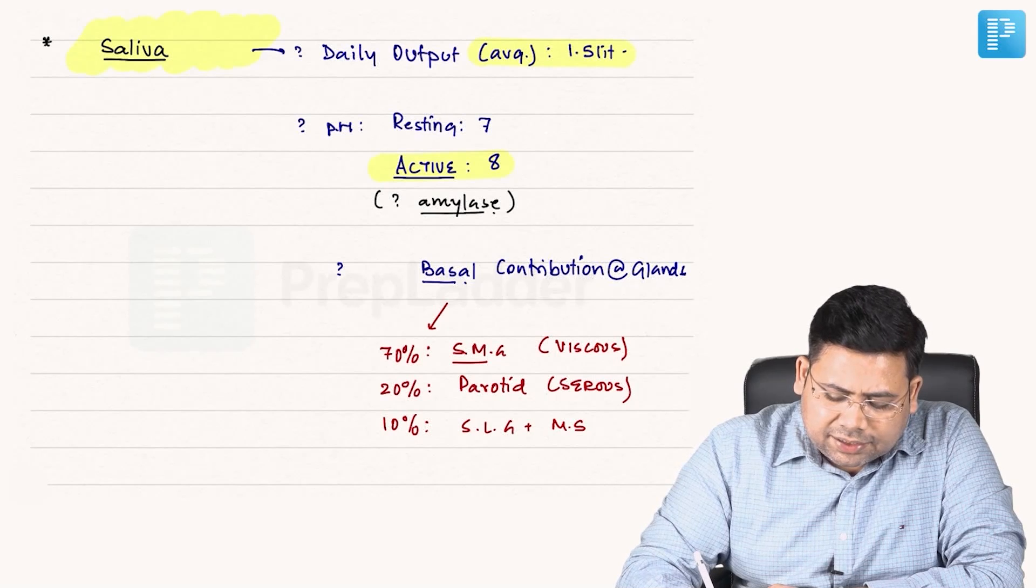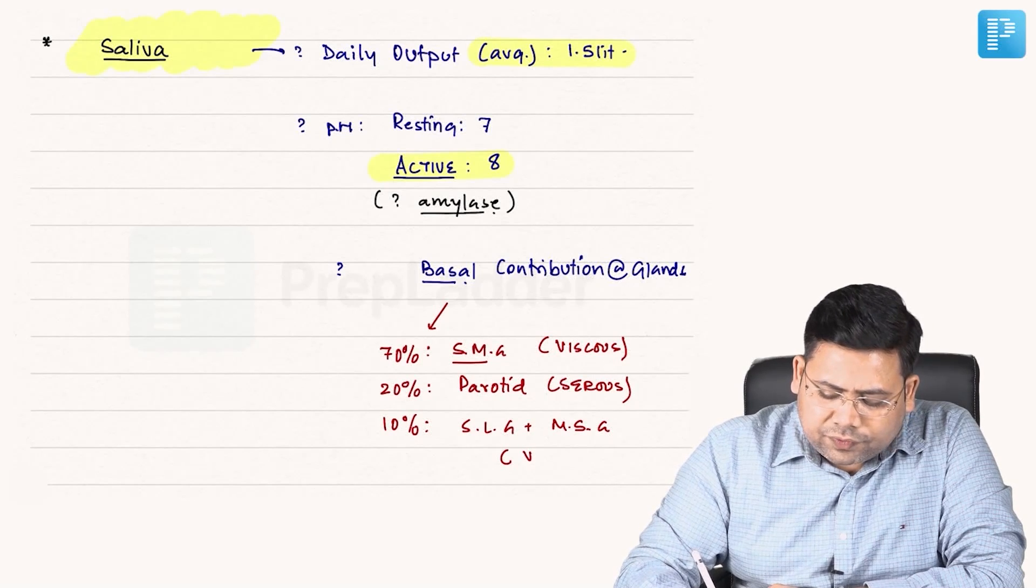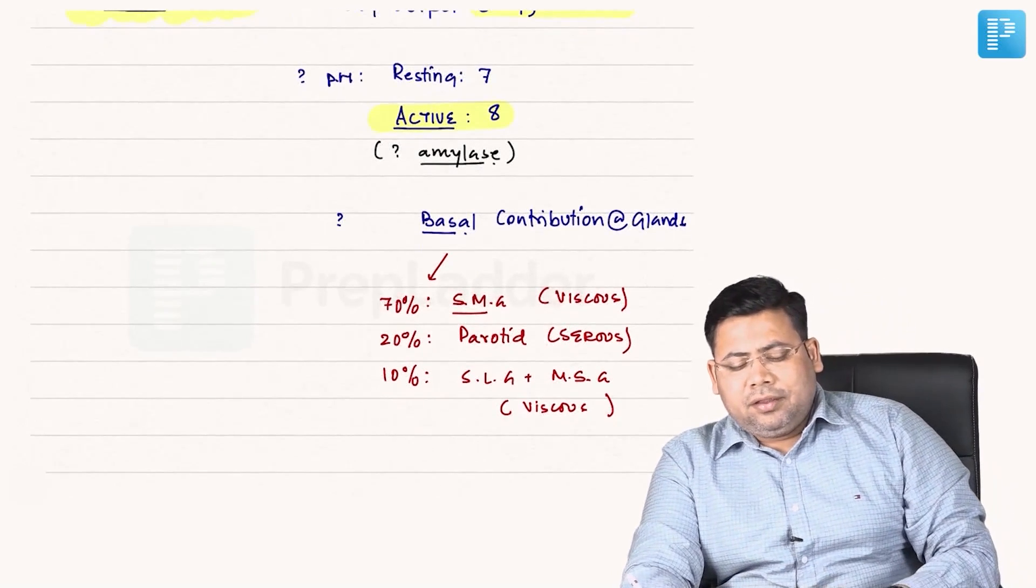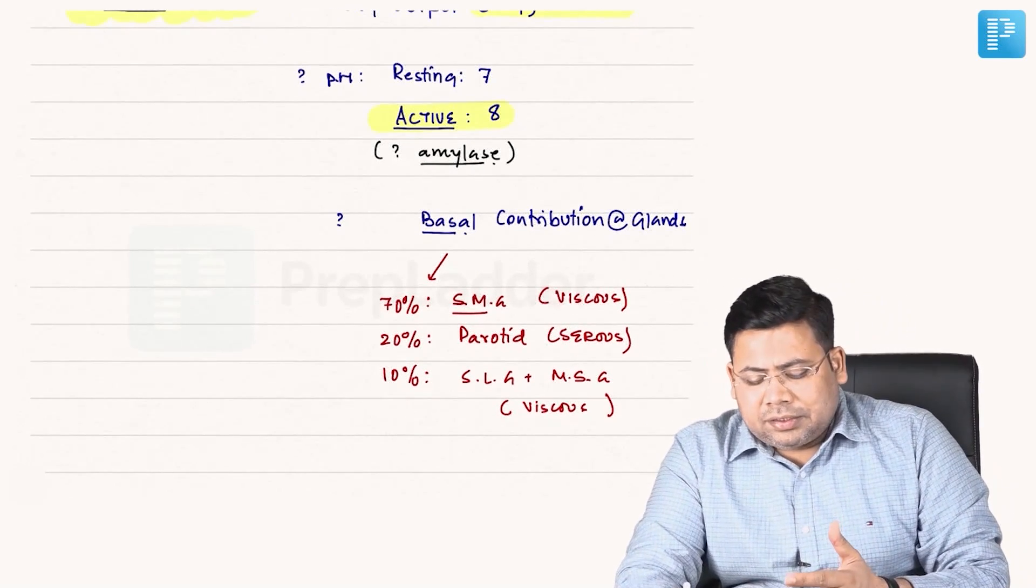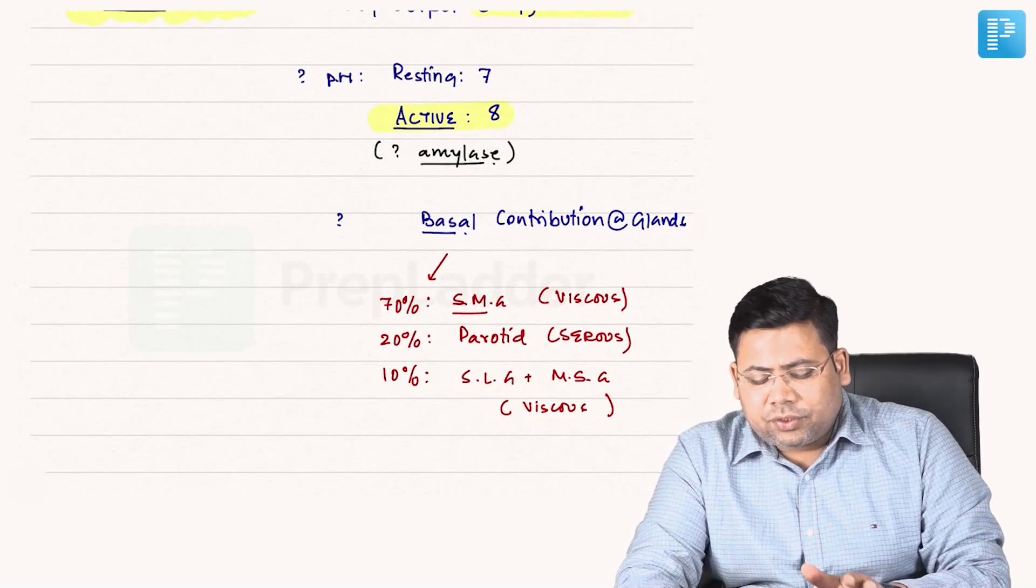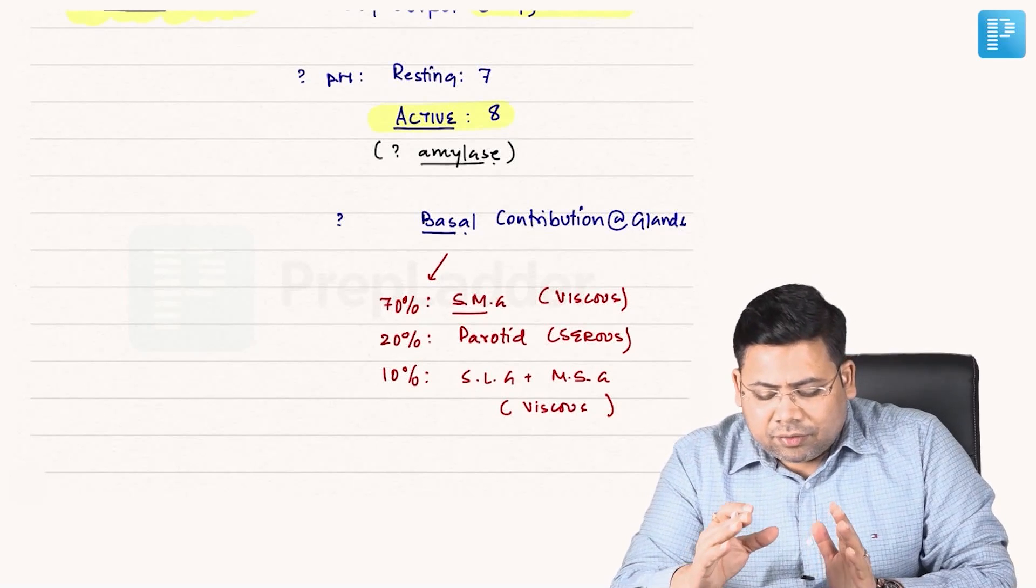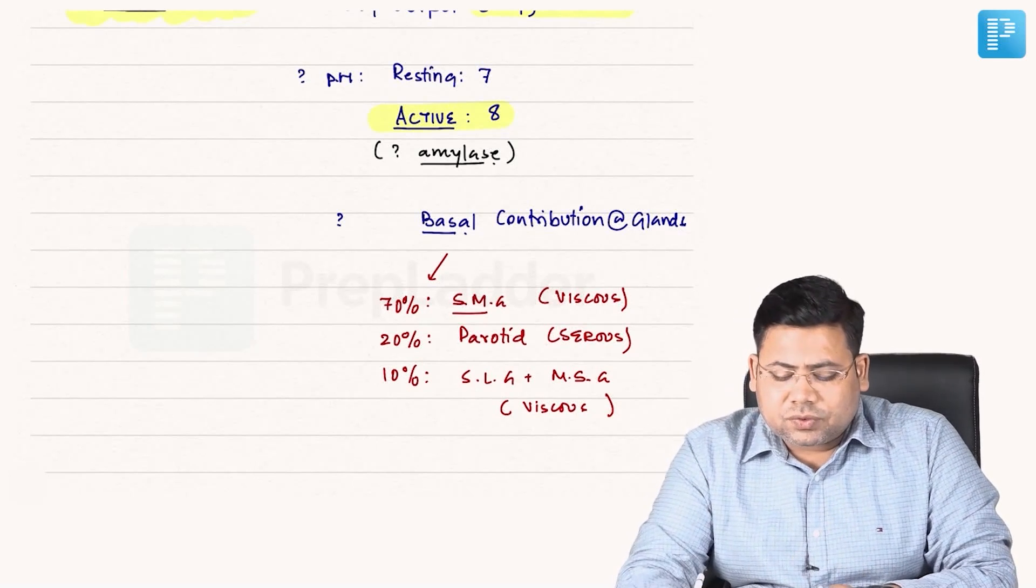Always remember except parotid everything is viscous. So this is serous. Then remaining 10 percent is by sublingual glands plus minor salivary glands and again they are also viscous except few glands like Ebner's gland which are having a serous secretion. But majority of them are having this basal secretion to be viscous in nature.